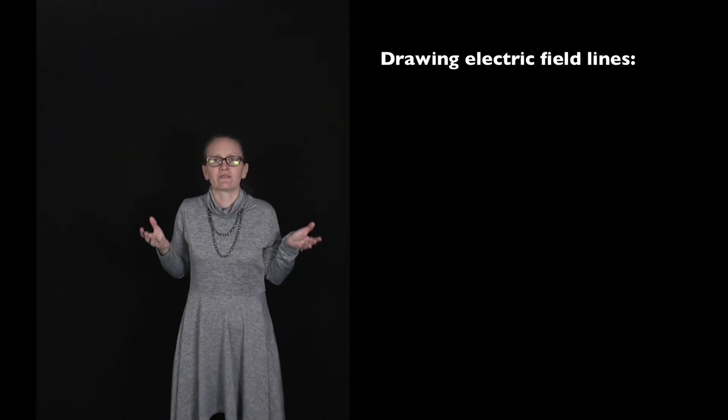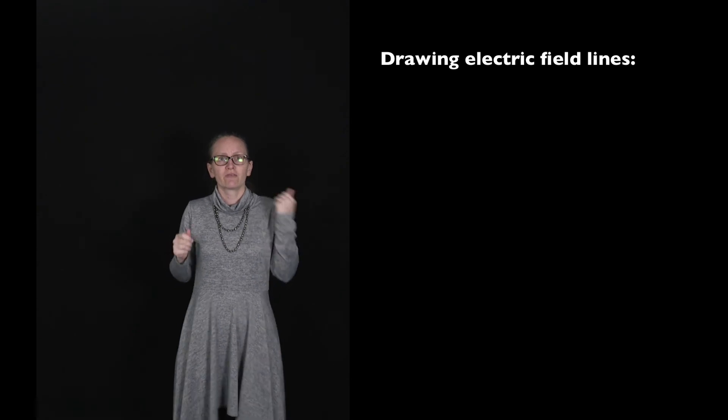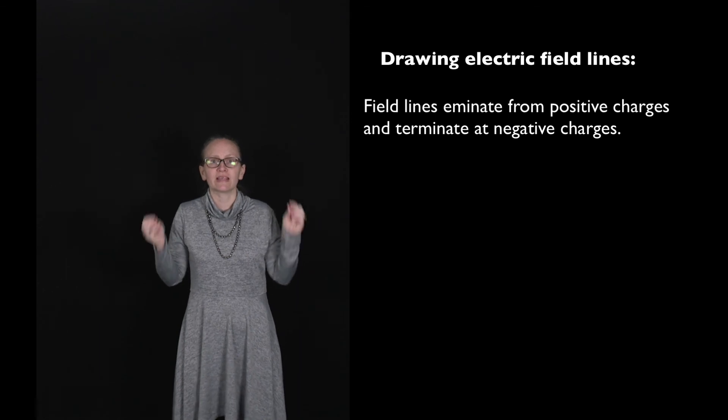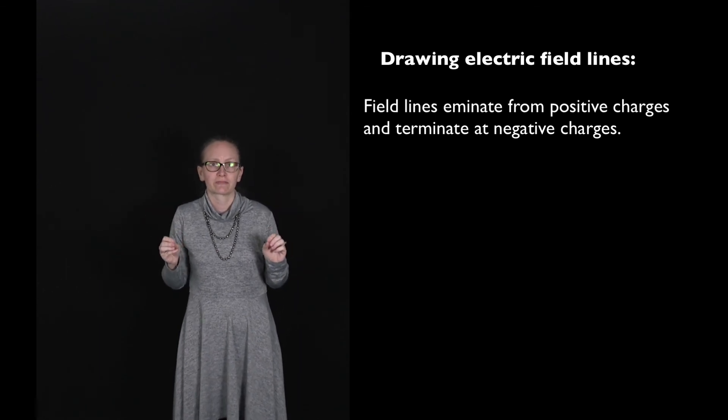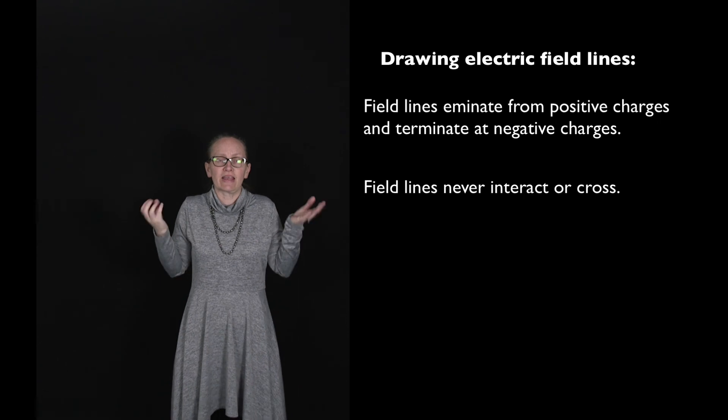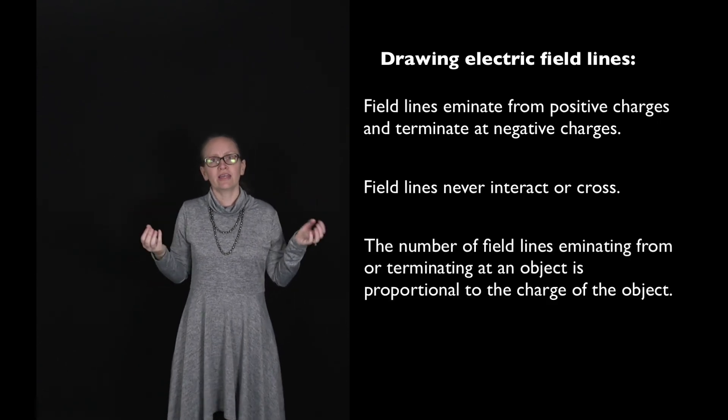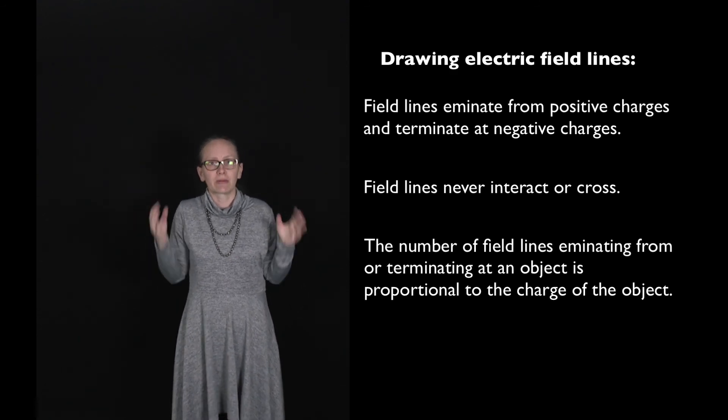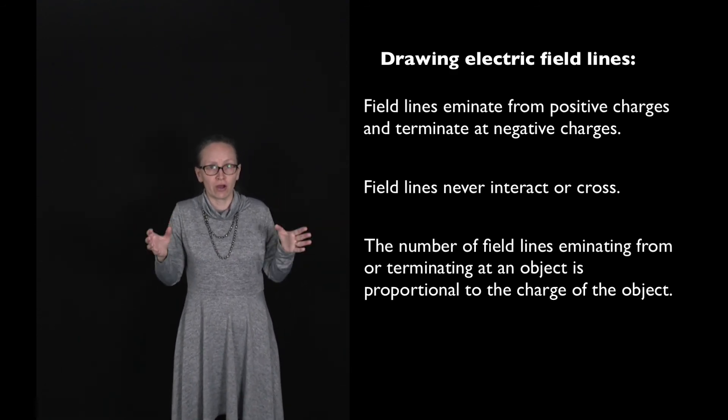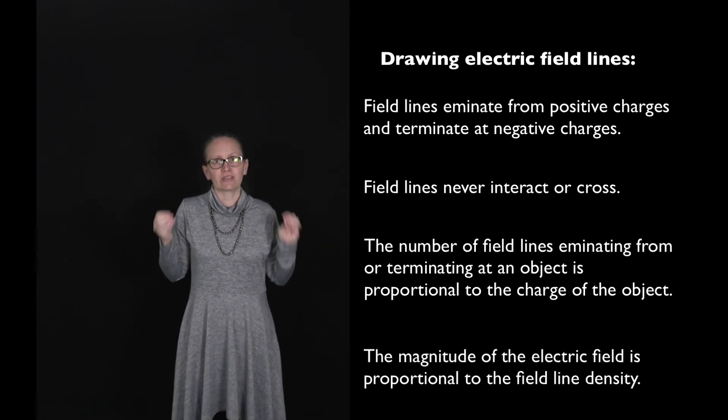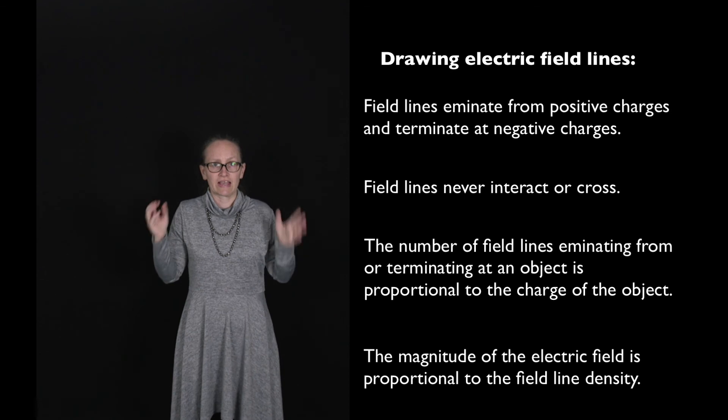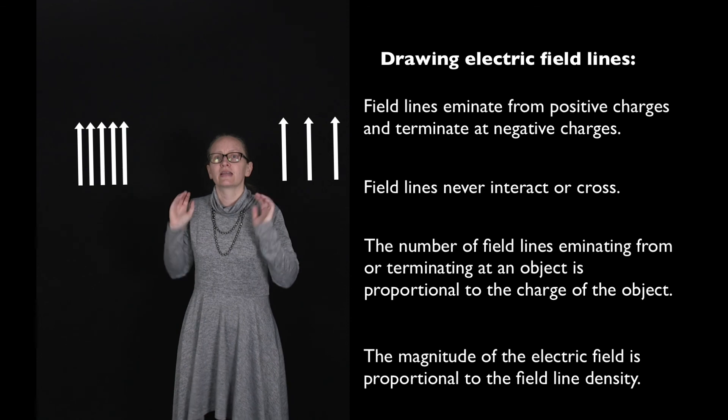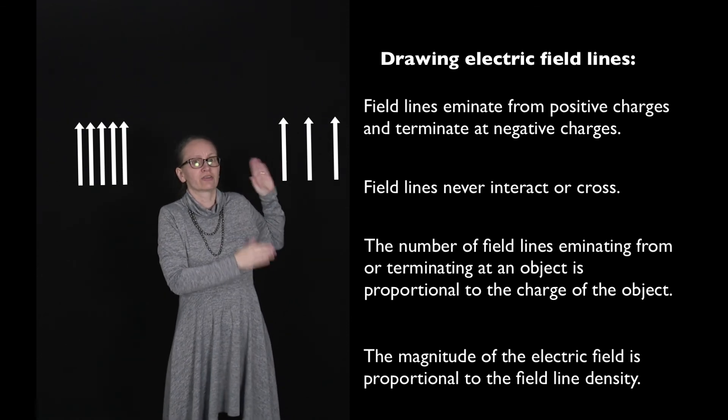So when drawing electric field lines, there's some useful points to follow. Firstly, field lines emanate from positively charged particles and terminate at negatively charged particles. Secondly, field lines never interact or cross. Thirdly, the number of field lines emanating from or terminating at an object is proportional to the charge of the object. And finally, the magnitude of the electric field is proportional to the field line density. So for example, this field here represented by these lines is stronger than the field represented here.